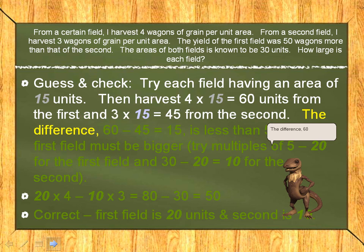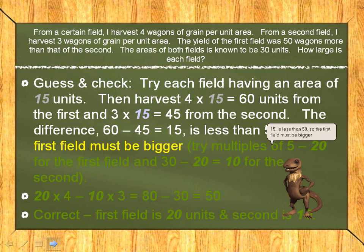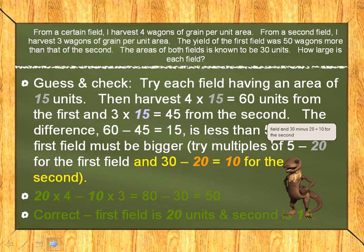The difference, 60 minus 45 equals 15, is less than 50, so the first field must be bigger. Try multiples of 5, 20 for the first field and 30 minus 20 equals 10 for the second.